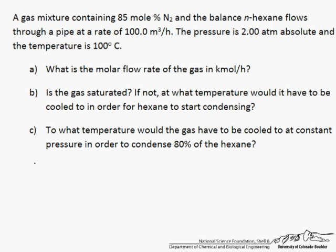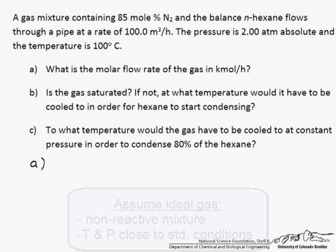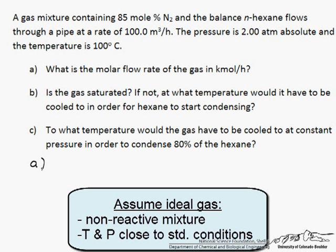So let's start with A. What is the molar flow rate of the gas in kilomoles per hour, and we are going to assume an ideal gas. The temperature is 100 degrees C. Most of it is N2, and if we looked at RT over P, we would find that it was greater than 5.